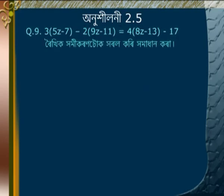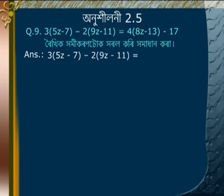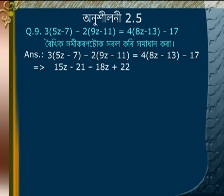Problem 9: Solve 3(5z minus 7) minus 2(9z minus 11) is equal to 4(8z minus 13) minus 17. Expanding: 15z minus 21 minus 18z plus 22 is equal to 32z minus 52 minus 17.